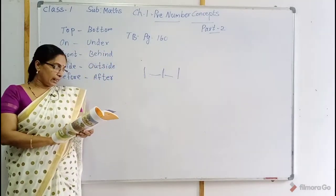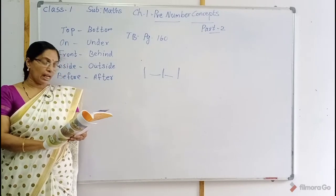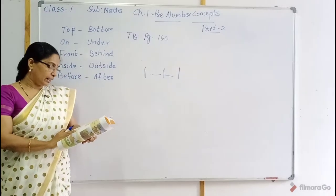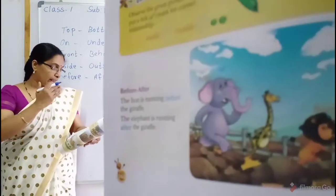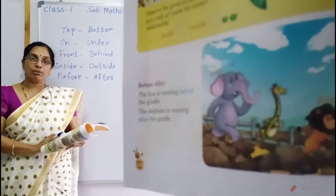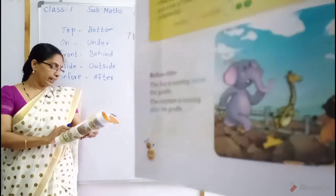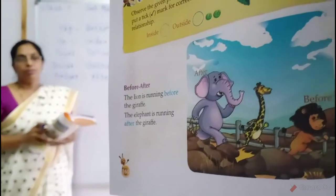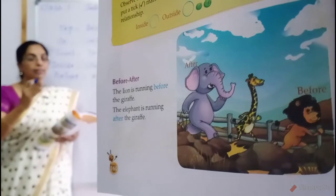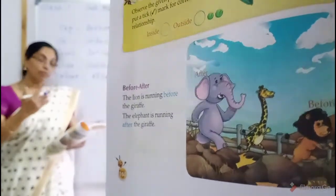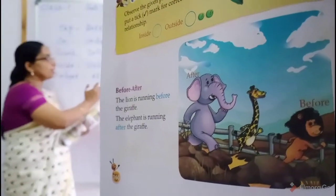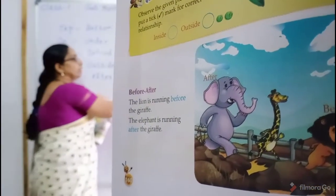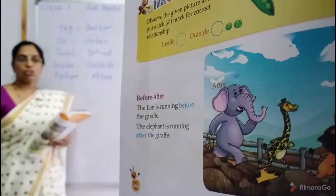See the textbook. The elephant is running after the giraffe. The giraffe is the reference. The elephant is running after the giraffe. The lion is running before the giraffe. Three animals are there — one animal in the middle, and before and after.